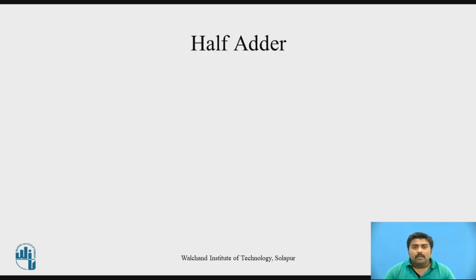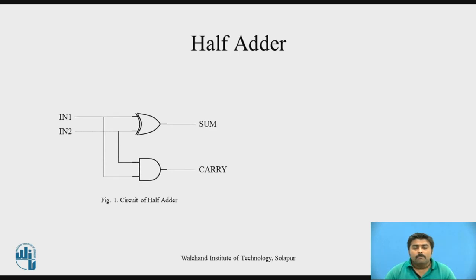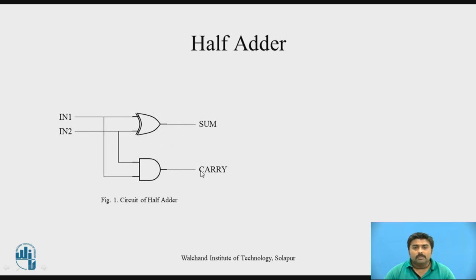So now let's start with the half adder. Everyone knows that the half adder has 2 inputs — say IN1 and IN2 — and you are getting 2 outputs, which are nothing but sum and carry. Sum is obtained with the help of an XOR gate, and carry is obtained with the help of an AND gate. So 2 inputs and 2 outputs — this is the half adder.